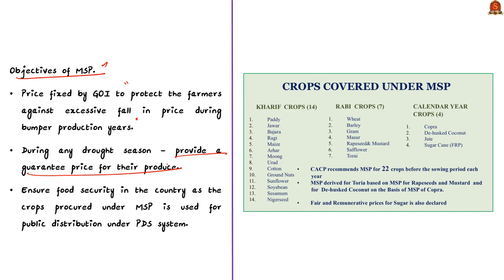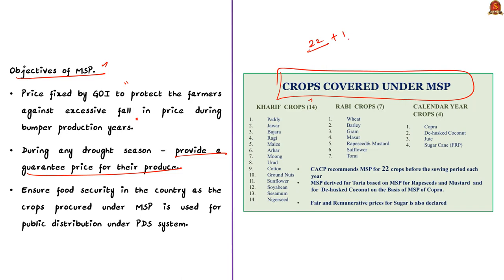Now let us see the crops which are covered under MSP. The government announces MSP for 22 mandated crops and FRP for sugarcane. Among the 22 crops, 14 belong to the Kharif season, 6 belong to the Rabi season, and 2 belong to commercial crops.